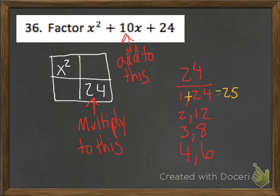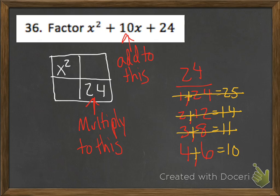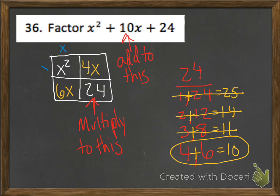I need the two numbers that multiply to 24 to add to a positive 10. Checking: 1 plus 24 is 25, 2 plus 12 is 14 — neither work. 3 plus 8 is 11 — that doesn't work either. 4 plus 6 is 10 — there's the one I want. So in my box I can put in 4x and 6x. Now I can factor: x squared is x times x, x times positive 4 gives 4x, and x times positive 6 gives 6x. So my two factors are x plus 4 times x plus 6.